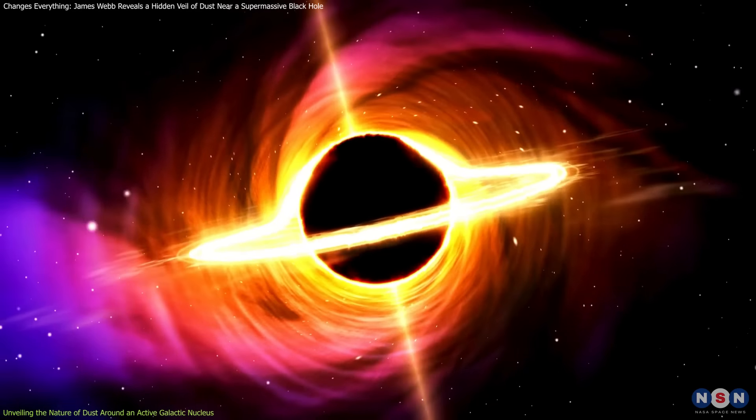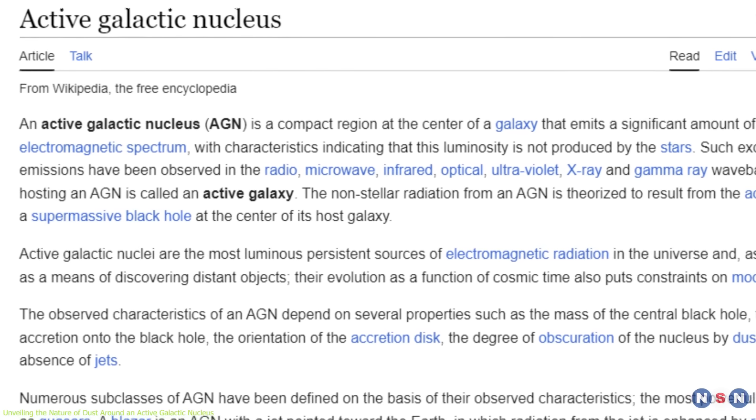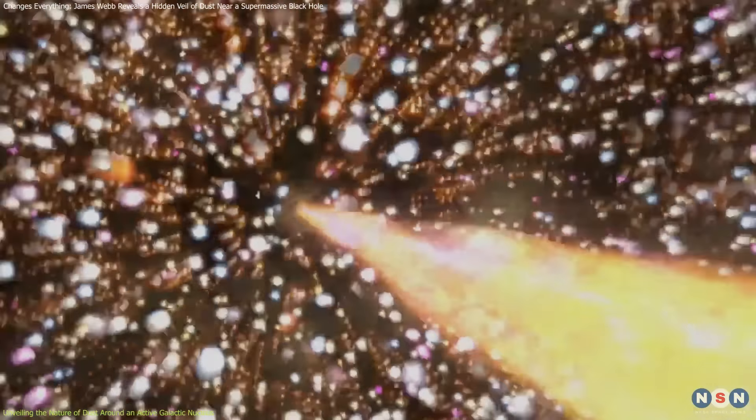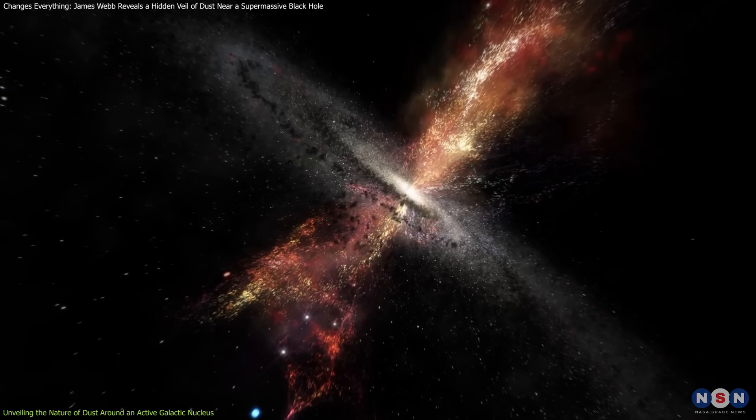When these black holes actively consume surrounding material, they become what's known as active galactic nuclei, emitting vast amounts of energy across different wavelengths of light. However, much about AGNs has remained hidden from view due to the thick clouds of gas and dust that often surround them, making them difficult to observe.